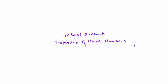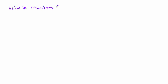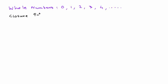Dotskill presents properties of whole numbers. The set of non-negative integers comprises the set of whole numbers: 0, 1, 2, 3, 4, and so on. The set of whole numbers has a few properties, and that's exactly what we are going to explore in this video. Let's start with the closure property of addition and also for multiplication.